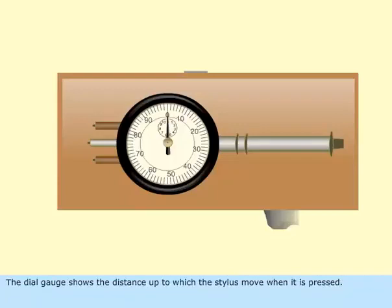The dial gauge shows the distance up to which the stylus moves when it is pressed.